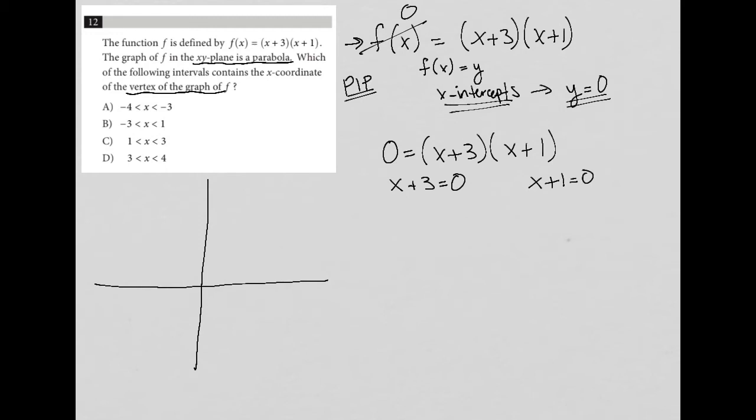When I solve for x in each case, I get x = -3. So there's one of my x-intercepts. And I get x = -1. That is my other x-intercept.